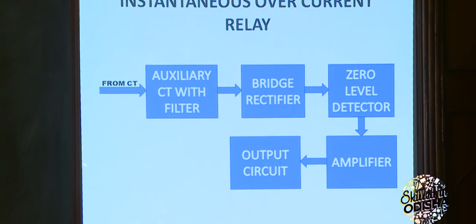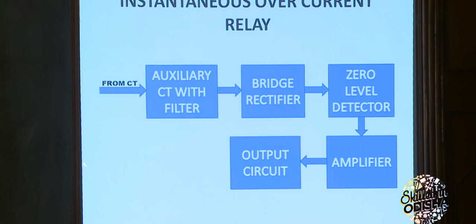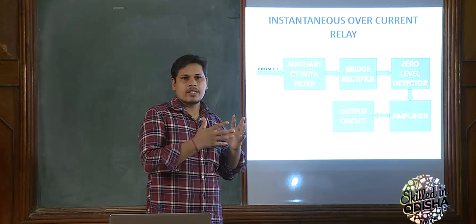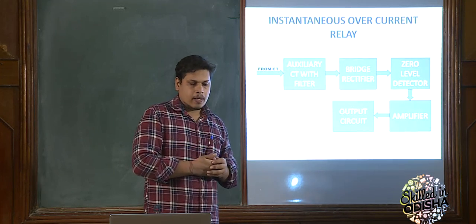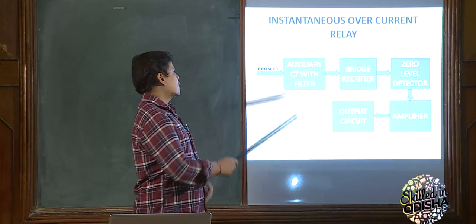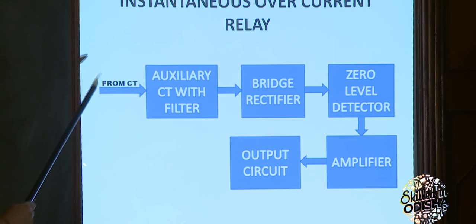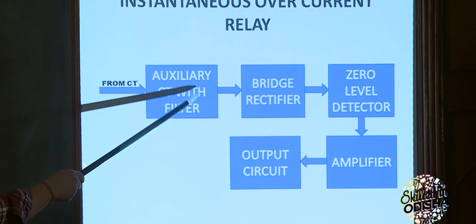Coming to the instantaneous overcurrent relay. The relays we are going to discuss are all forms of static relay. Although instantaneous overcurrent relay also exists in dynamic relay form, we will consider only the static part. The instantaneous overcurrent relay — what are its various parts and their functions? The input comes from the current transformer (CT), and is supplied to an auxiliary CT with filter.